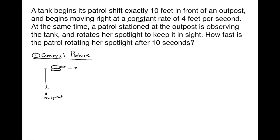We know this distance — let's call that y — which is the perpendicular distance from the outpost to the tank's line of travel. And we also know this distance x, which is how far the tank has moved along that line. So we've got our variables. Now let's put down some numbers that are true at any instant of time.